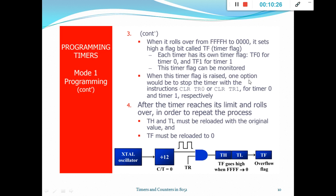While counting, the timer flag must be monitored. When the timer flag is raised (becomes 1), one option is to stop the timer using CLR TR0 or CLR TR1. After the timer reaches its limit and rolls over, to repeat the process, TH and TL must be reloaded with the original values. The TF flag must also be cleared — if you leave TF equal to 1, the timer will not count. So you reload TH and TL with the initial value and also clear TF to restart the counting process.